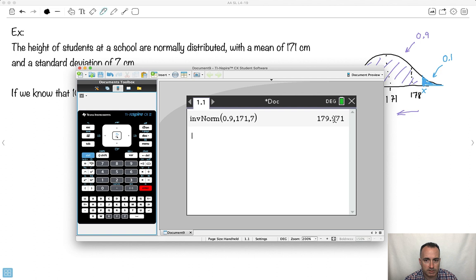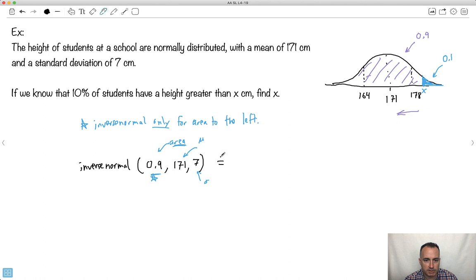It will tell me the x value. So this is, well, this is three significant figures. This will round up. It'll be 180. So it'll be approximately 180 centimeters. This will be the answer.